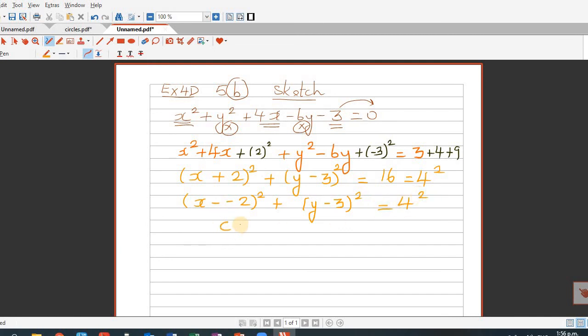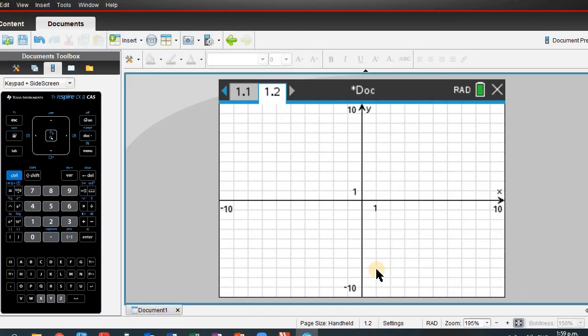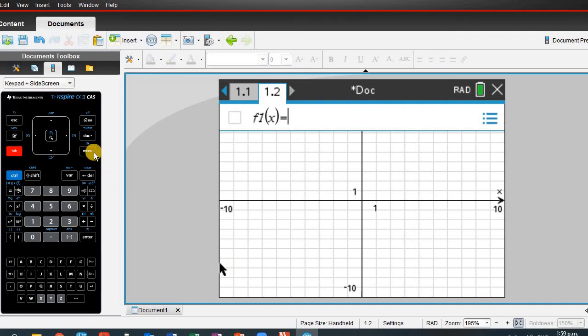Sketching is very difficult so I will show you this on the calculator. The center is minus 2 comma 3 and the radius is 4. Let's enter the equation, go under the menu.